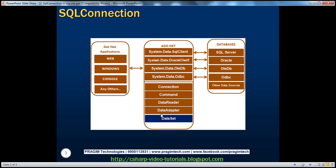Along the same lines, if the database is Oracle, then we use the classes present in System.Data.OracleClient, and the connection is OracleConnection, OracleCommand, OracleDataReader, and OracleDataAdapter. If it's an OLEDB data source — for example, Excel or Microsoft Access — we use the classes in System.Data.OleDb: OleDbConnection, OleDbCommand, etc. These objects — Connection, Command, DataReader, and DataAdapter — are provider-specific, whereas the DataSet is provider-independent. We'll talk about DataSet in a later session.